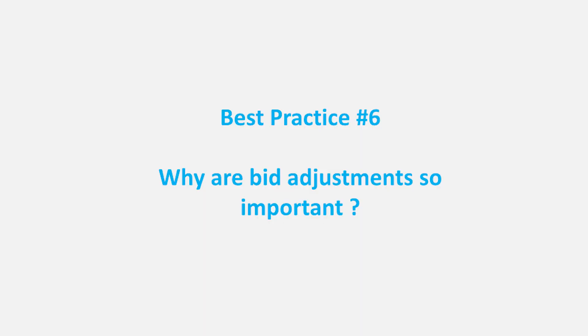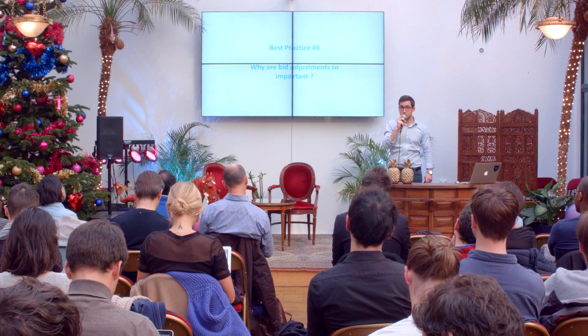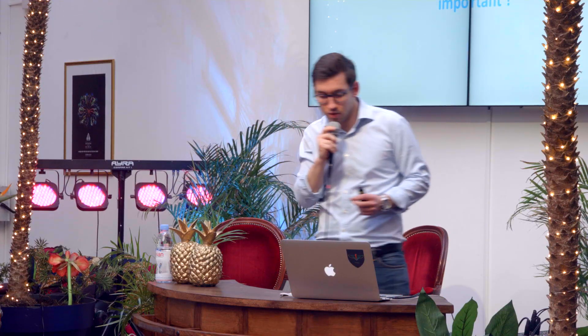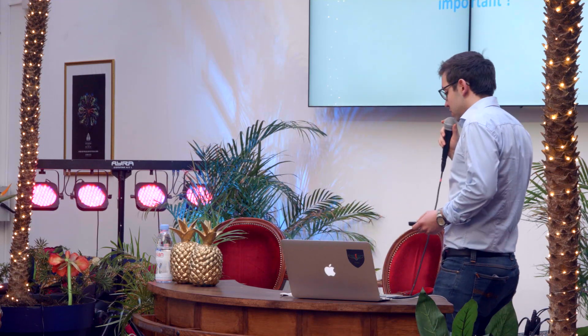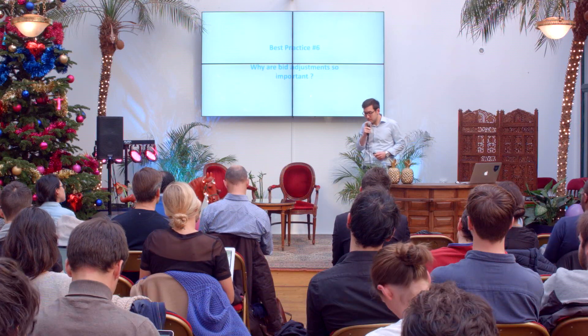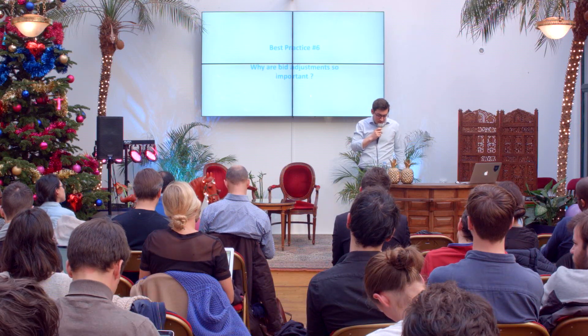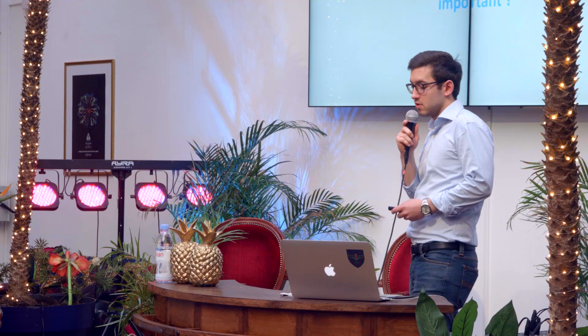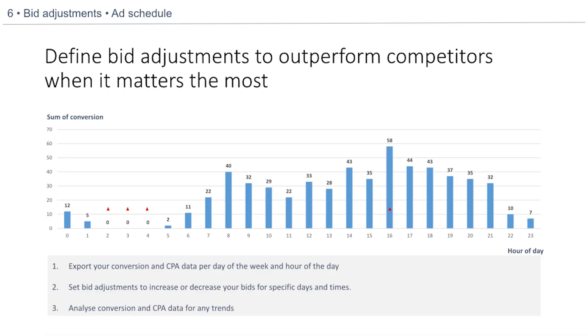Best practice number six: why are bid adjustments so important? One of the main features of AdWords is enabling you to really know when and where your users convert. They might be in a specific location, on a specific device — mobile phones or computers — or they might convert at a different time of day. For example, maybe your users don't convert at night, they convert during the day. This is an example of a bid adjustment we call ad scheduling.